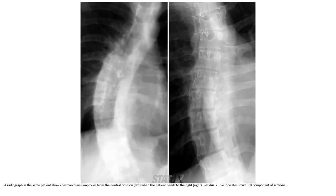PA radiograph in the same patient shows no significant change from the neutral position when the patient bends to the right. This curvature indicates a structural component of scoliosis.